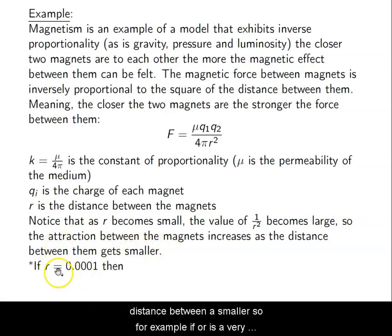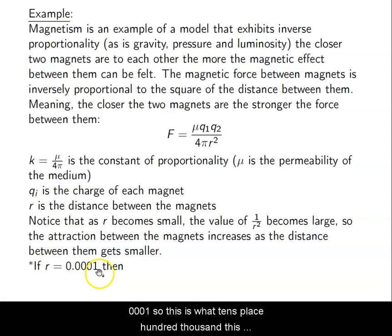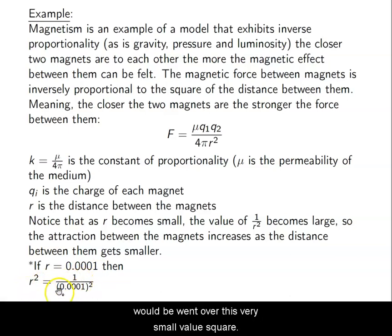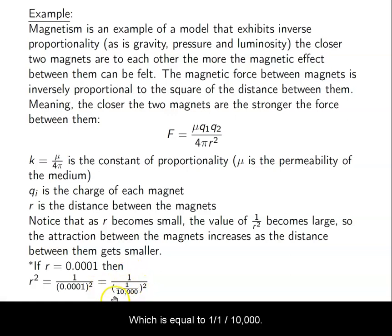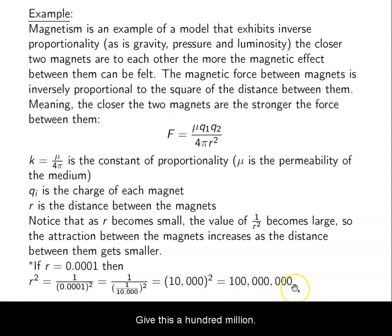So the attraction between the magnets increases as the distance between them gets smaller. For example, if r is a very, very small number, 0.0001, so this is tens place, hundreds, thousands. This is 1 in the 10,000th place, so that's 1 over 10,000. So r squared would be 1 over this very small value squared, which is equal to 1 over 1 over 10,000. And squaring that is the same as 10,000 squared. So remember, you multiply by the reciprocal of the denominator, so that turns into 1 times 10,000, so that's 10,000. Squaring that gives us 100 million.